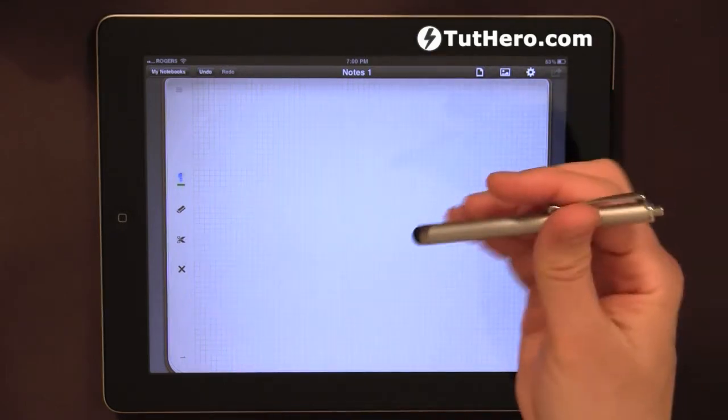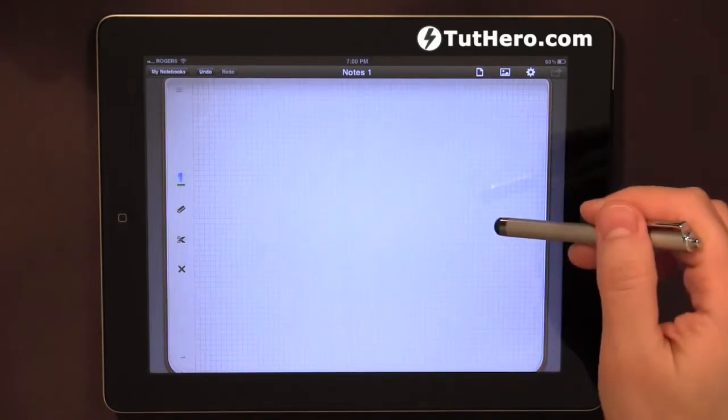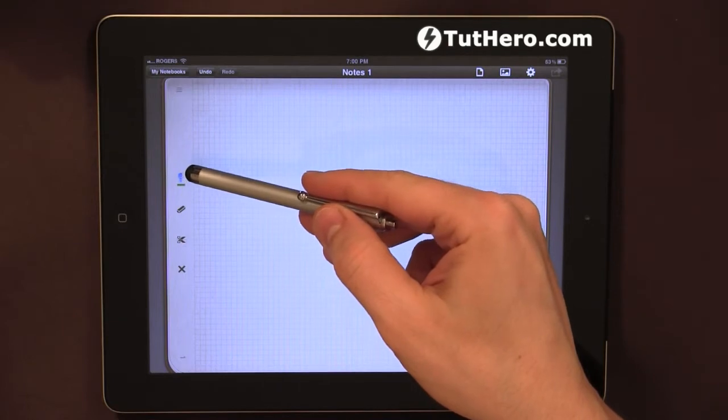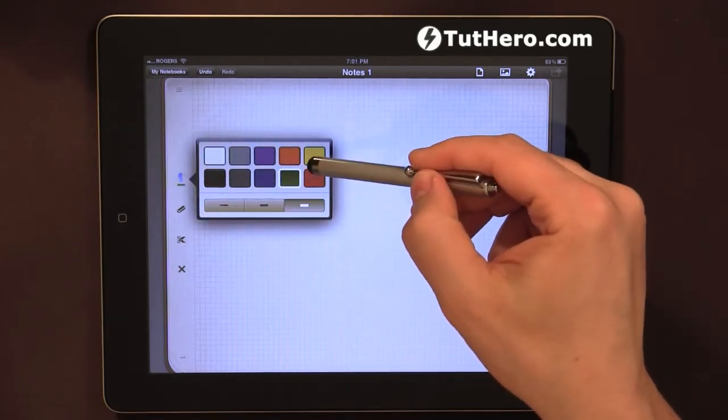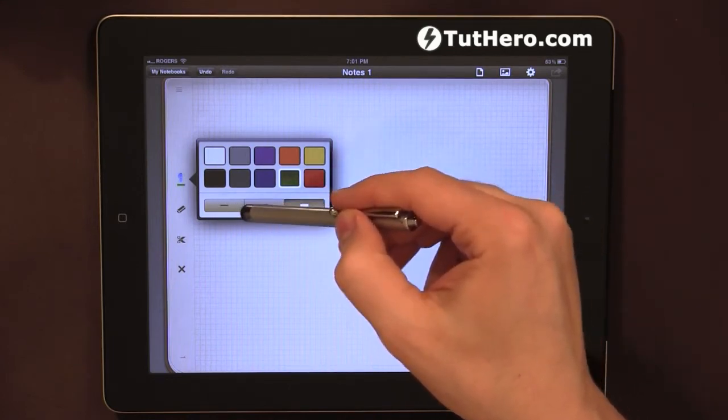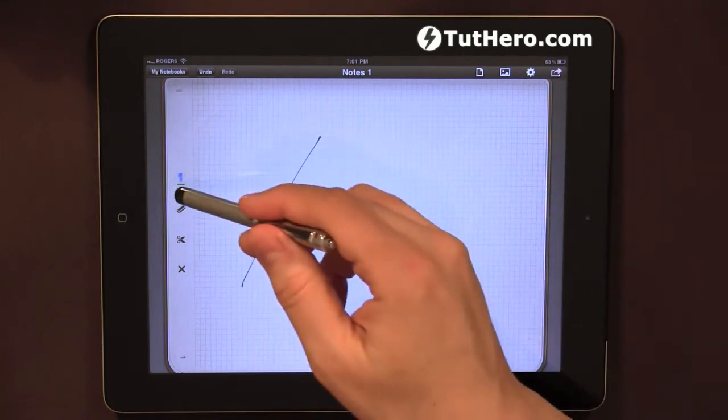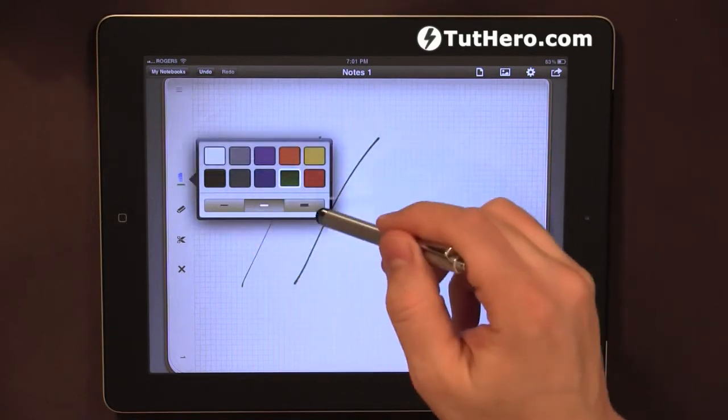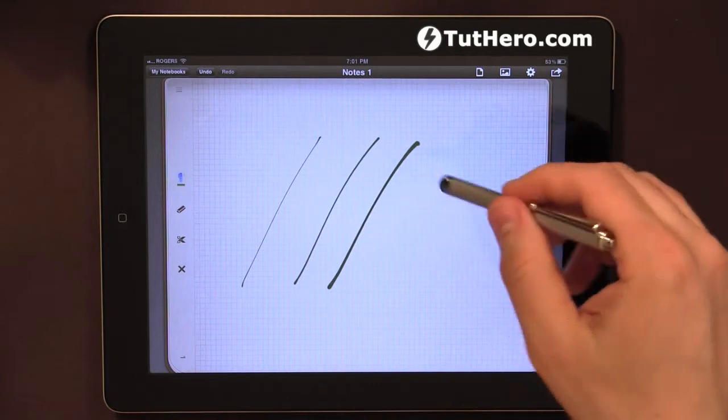It will work just as well with your fingers as with a stylus, no problem. When you're taking notes, you have a few options on the left side. First, you have different colors and different line thickness: very light and thin, medium, and very thick.